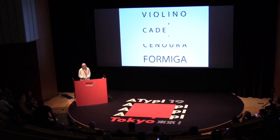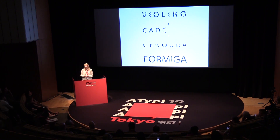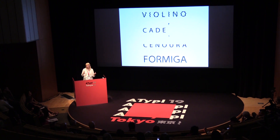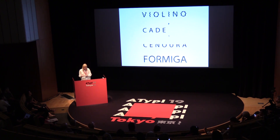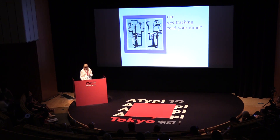Regarding the design of the experiment: there were seven categories of kinetic typography that were matched with seven controlled words. In order not to have an impact between the word match and the category, we had two groups — Group A and Group B — that saw different matches, along with an eye tracking system.